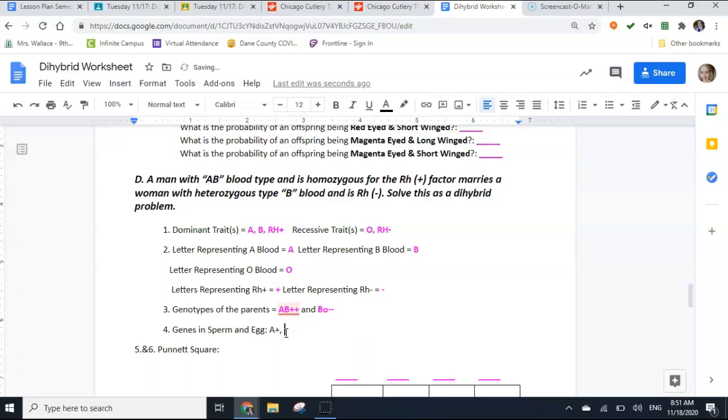I can't have two letters in the same sperm or the same egg. I also can't have two Rh's in the same sperm or same egg. Each would be a blood type and a positive or a negative.